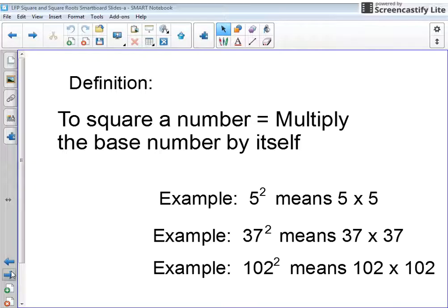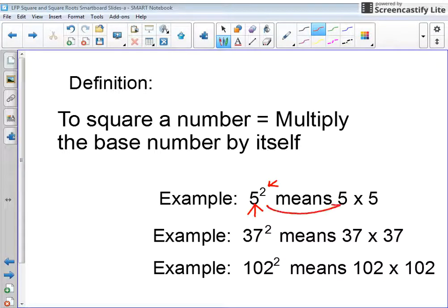To square a number means to multiply the base number by itself. So I have some examples on the screen you can see. I have 5 squared. So that really means to take this base number 5 and multiply it by itself 2 times. And that's what happens over here, 5 times 5.